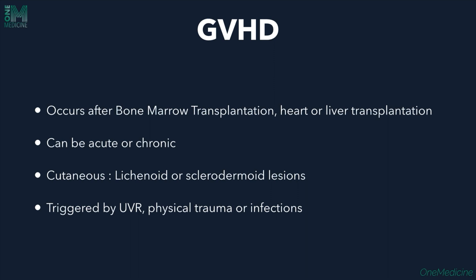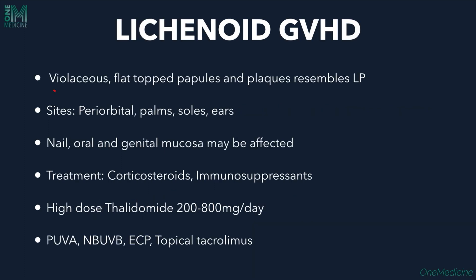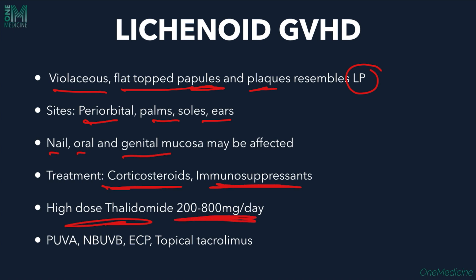GVHD (graft versus host disease) occurs after bone marrow, heart, or liver transplantation, and can be acute (less than 7–12 days) or chronic (more than 3 months). Cutaneous lesions are lichenoid and sclerodermoid, triggered by UV radiation, physical trauma, or infections. Lichenoid GVHD presents as violaceous flat-topped papules and plaques resembling lichen planus; sites include periorbital, palms, soles, ears, nails, oral mucosa, and genital mucosa. Treatment includes corticosteroids, immunosuppressants (cyclosporine, azathioprine), high-dose thalidomide (200–800 mg/day), PUVA, NBUVB, ECP, and topical tacrolimus.